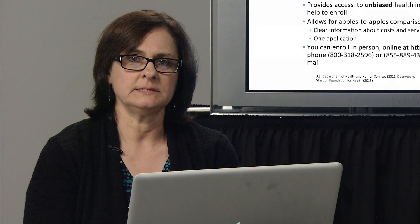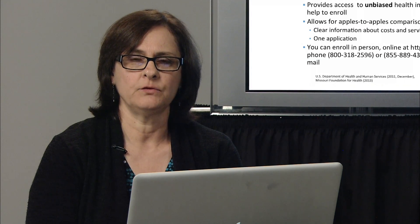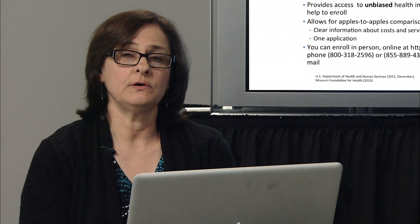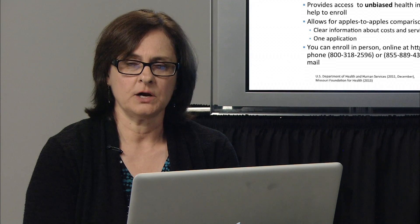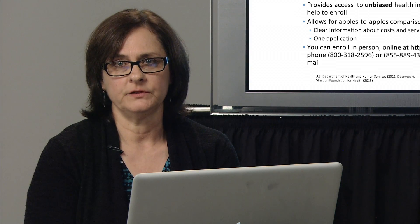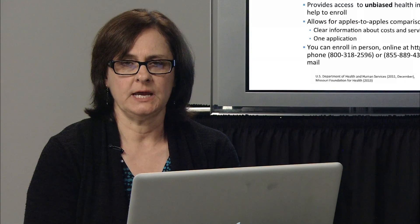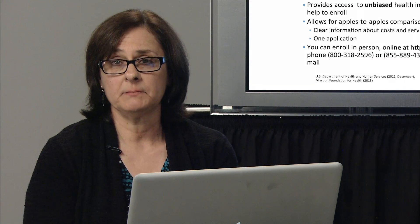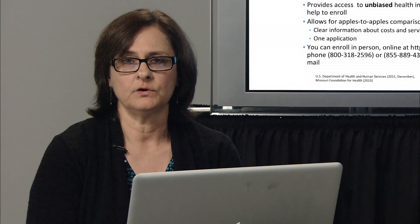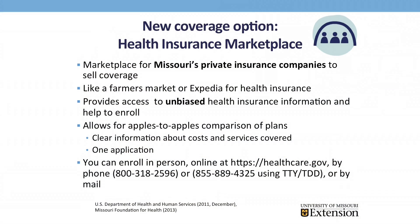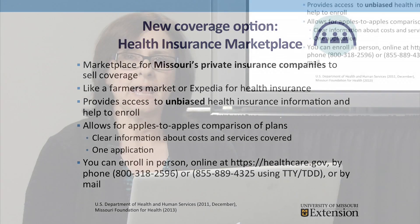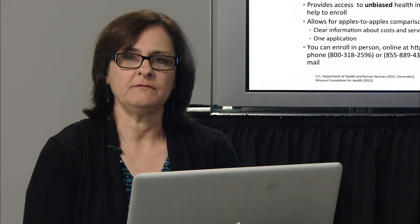Consumers can still get insurance outside the marketplace, but this is a new way for those who can't find it otherwise. If you aren't satisfied with your current health insurance or you don't have health insurance at all, you can apply for a private plan in the marketplace to meet the Affordable Care Act requirement that everyone have health insurance. You must enroll in the marketplace to get tax credits or help with premium costs or cost-sharing reductions if you qualify. The health insurance marketplace is an online exchange where private companies offer health plans that meet the minimum coverage and all health benefits required by the Affordable Care Act. It's kind of like a farmer's market or an online travel site where you can compare similar plans and choose the one that best meets your needs. The marketplace offers unbiased information to help you enroll, and you can make an apples-to-apples comparison of plans by filling out one application.